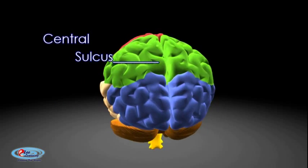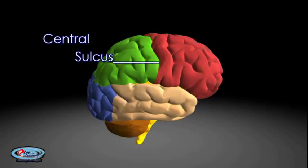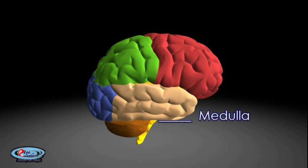The central sulcus is a fold in the cerebral cortex in the brains of vertebrates. Also called the central fissure, the central sulcus separates the parietal lobe from the frontal lobe.